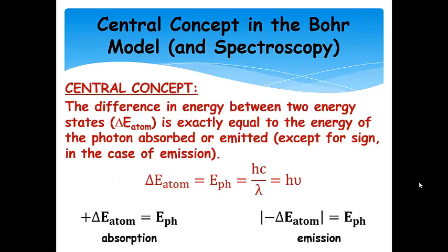Okay, so the central concept in all of this is that the difference in energy between two energy states, and so we've been calling that delta E atom in our conceptual discussion. That's exactly equal to the energy of the photon absorbed or emitted, except for the sign in the case of emission. So, delta E atom is equal to E photon, okay?